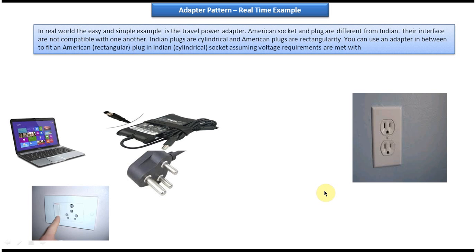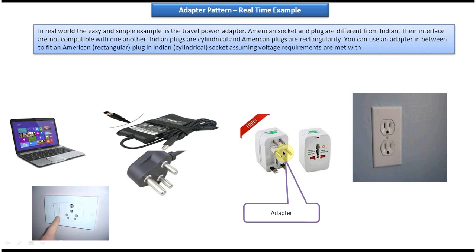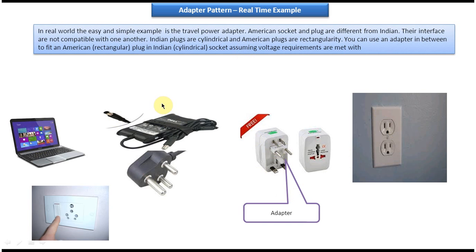You can go to any electrical shop and buy a universal adapter. Connect one end of the universal adapter to the electrical socket in the USA, which accepts only a rectangular plug. Then connect the laptop charger into the other end of the universal adapter, and connect the laptop charger to your laptop. In that way we can make these two incompatible interfaces work together.